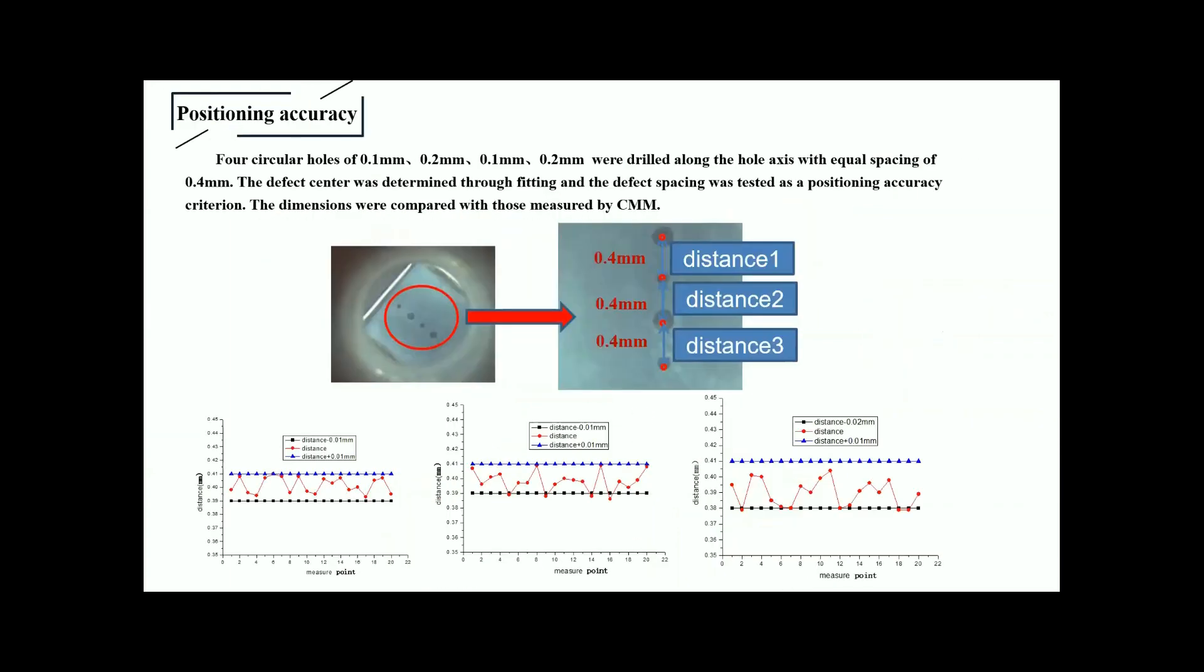To evaluate the positioning accuracy of the system, circular holes were drawn along the hole axis with equal spacing of 0.4 mm. The defect center was determined through fitting and defect spacing was tested as a positioning accuracy criterion. The dimensions were compared with those measured by CMM. The results show that the positioning accuracy of the system was less than ±0.02 mm.